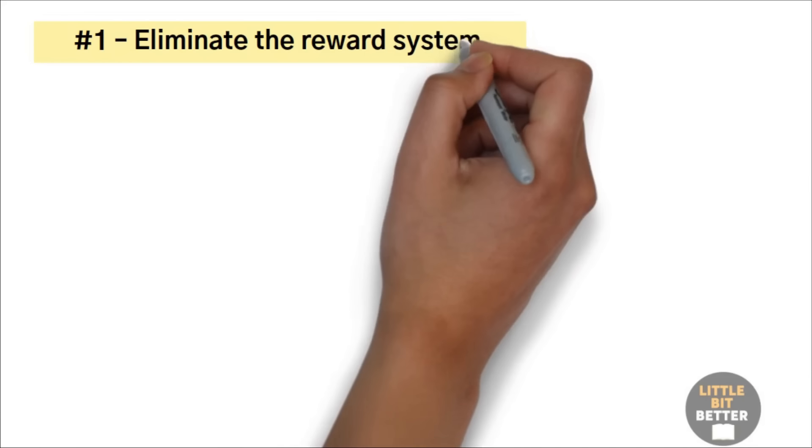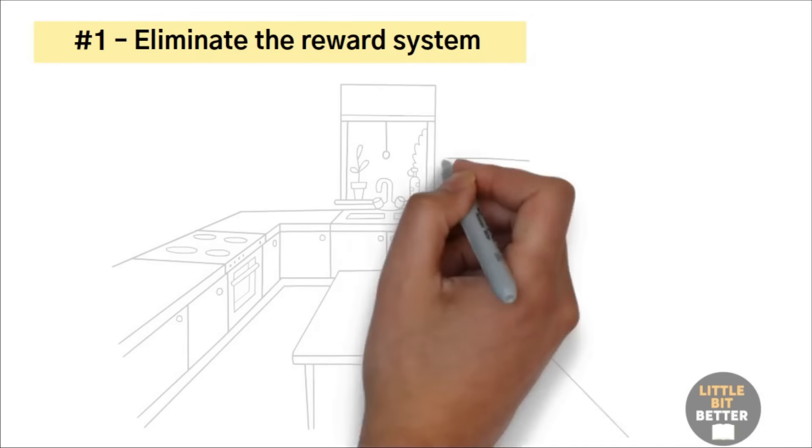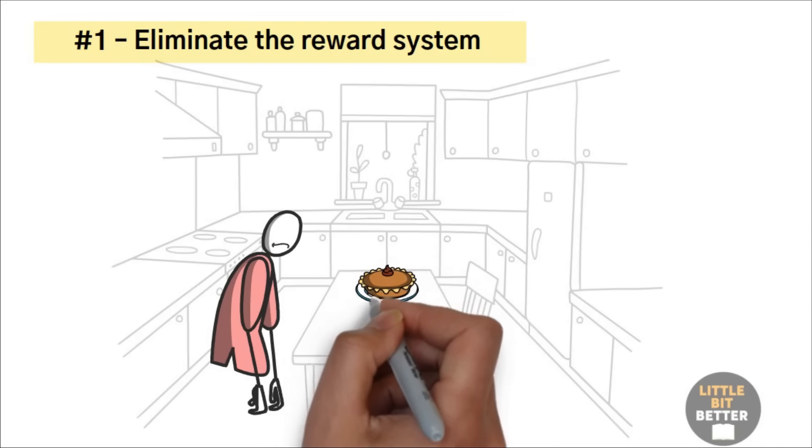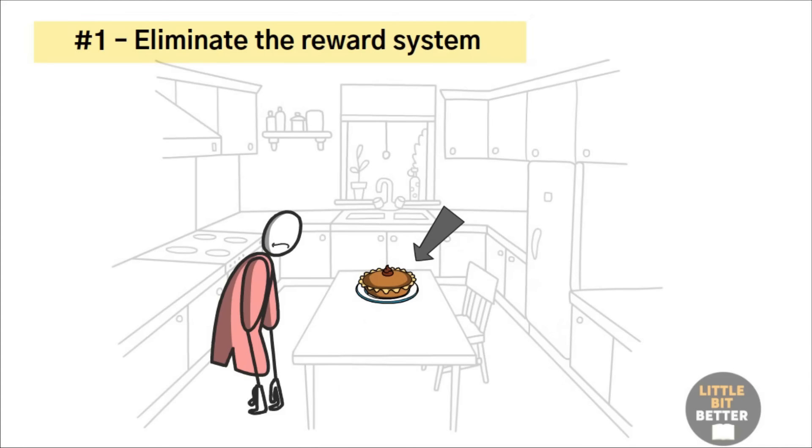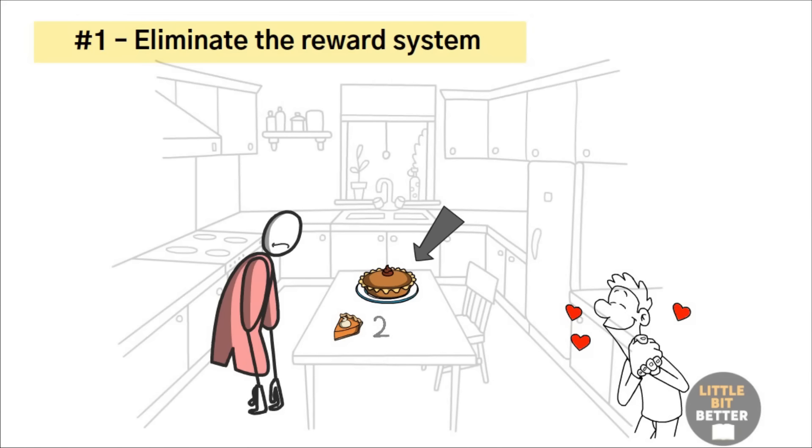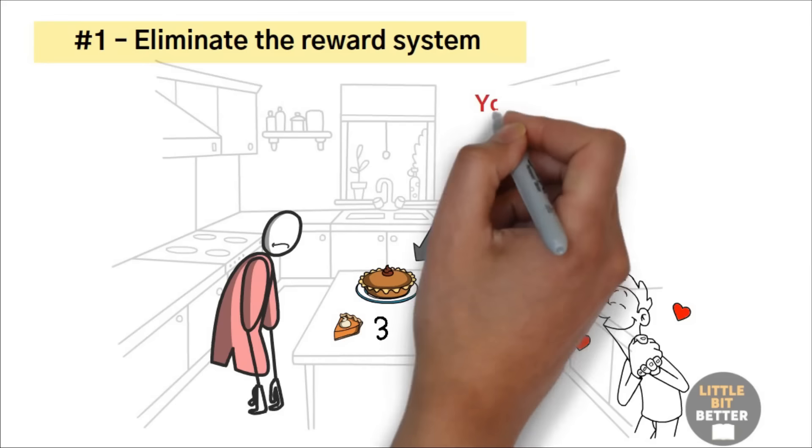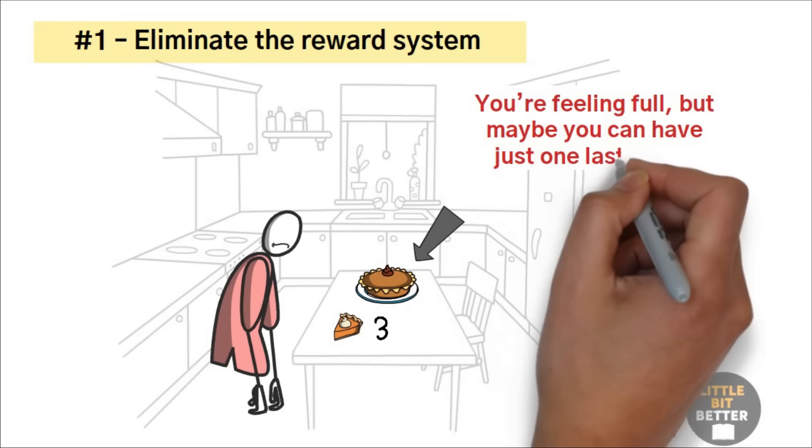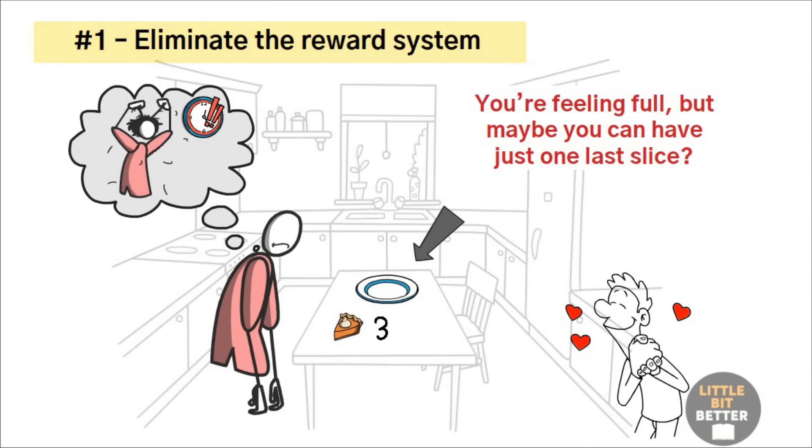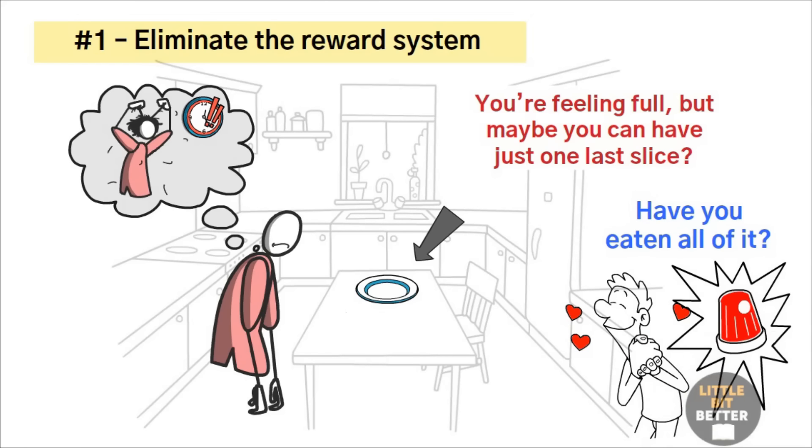Imagine you've just arrived home from work, you've had a bad day, and you are so stressed. Well, you found out your wife or husband baked an amazing chocolate cake. It's on the table and you can already taste the soft dough just sweet enough to match the creamy melted chocolate sauce. You serve yourself a small slice first, and then a second, and a third one. You're feeling full, but maybe you can have just one last slice?